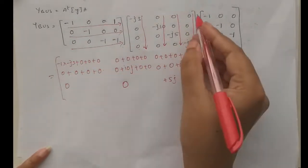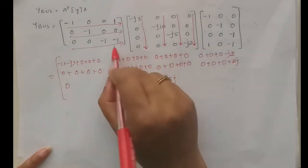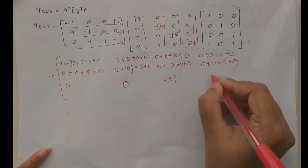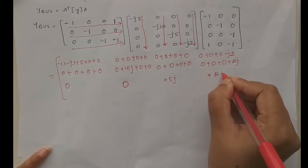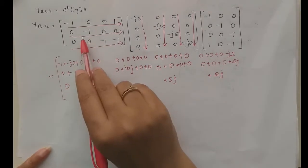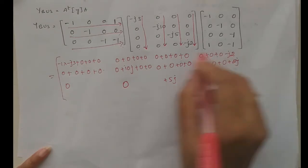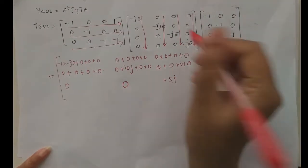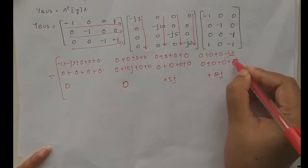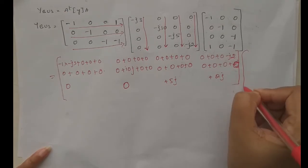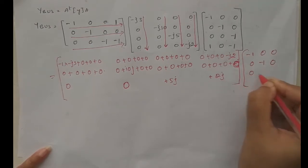Now the intermediate product matrix A-transpose times Y is formed. We write matrix A as: minus one, zero, zero; zero, minus one, zero; zero, zero, minus one; one, zero, minus one. The resulting intermediate matrix is: plus j3, zero, zero; zero, minus j2; zero, plus j10, zero; zero, zero, zero; zero, j5, j2.